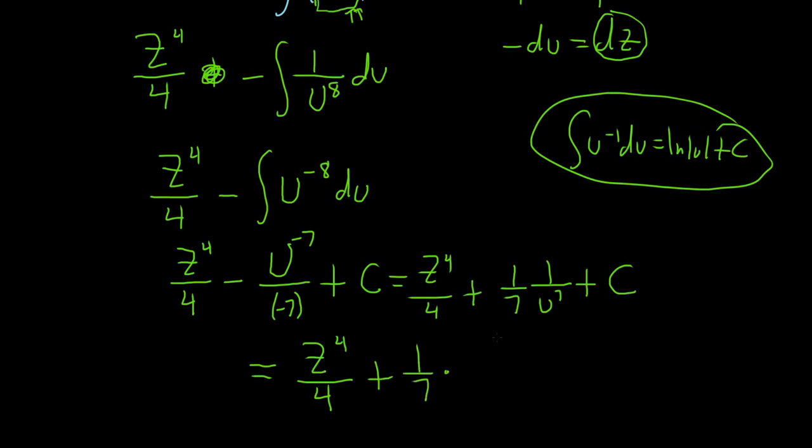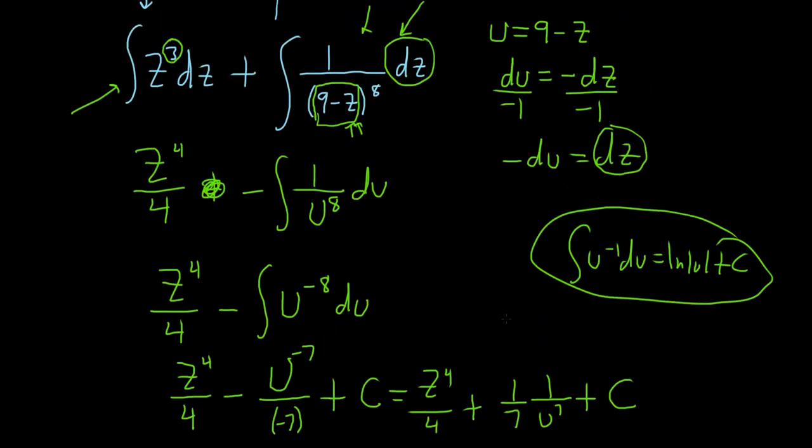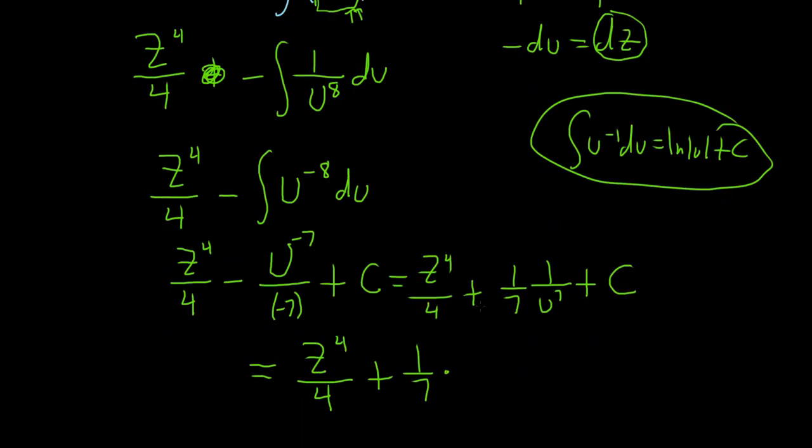This is equal to z to the 4 over 4 plus 1 seventh. And then u, I already forgot what it was. U was way up there. 9 minus z. So u is 9 minus z. So this is 1 over 9 minus z to the 7th, and then plus our constant of integration capital C.